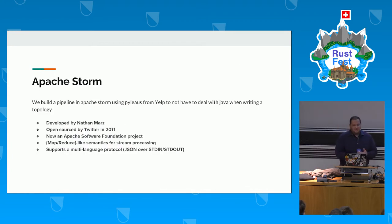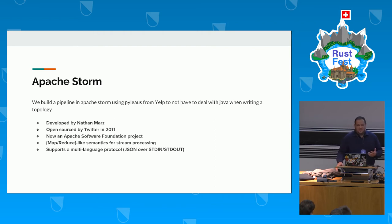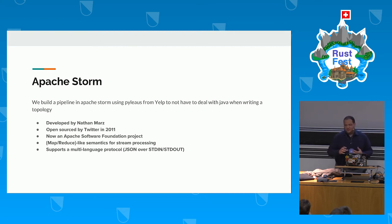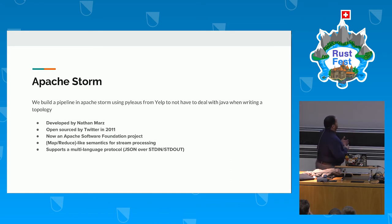We decided as a team — we were two programmers and three or four analysts when we started — to write a real-time stream processing data pipeline to ingest all this data that comes at various speeds and do some analysis. We were coming from different programming backgrounds and all agreed that Python is a good middle ground for everyone, both programmers and analysts. We wanted to use Apache Storm because we thought it was a good fit. We came across something called Pyleus from Yelp that allows you to write real-time stream processing jobs in Python without having to fiddle around with anything related to the JVM. Storm was open-sourced by Twitter, written by Nathan Marz in 2011, and we built our entire DNS log analysis pipeline on top of Apache Storm using Python.